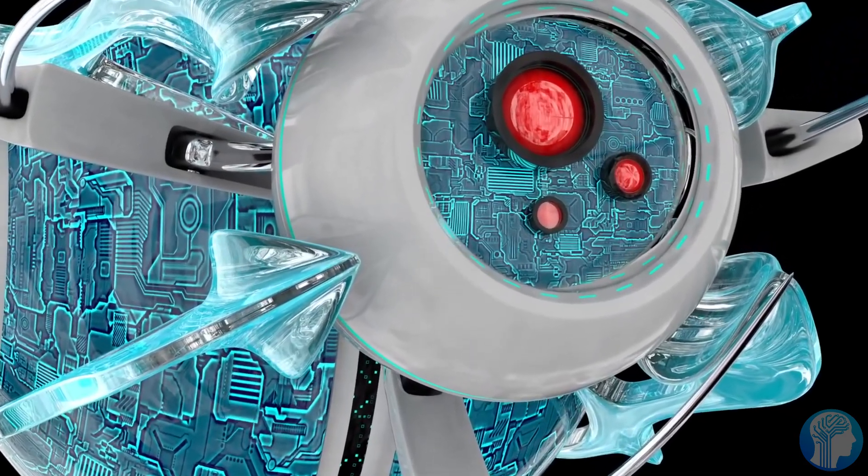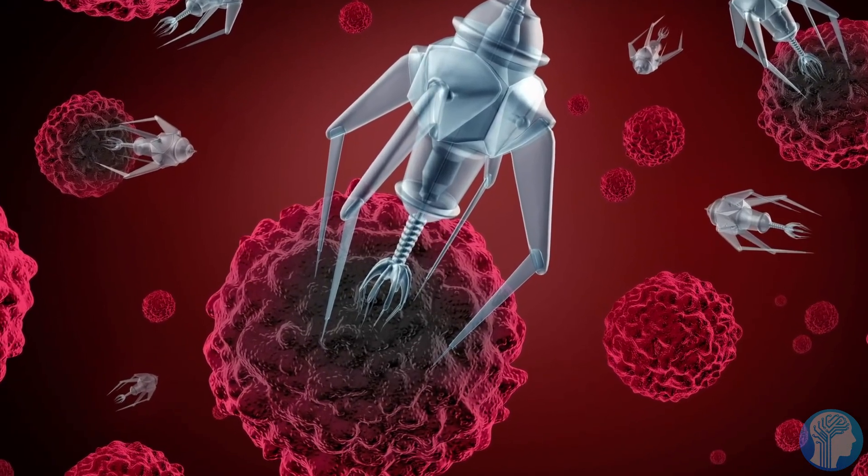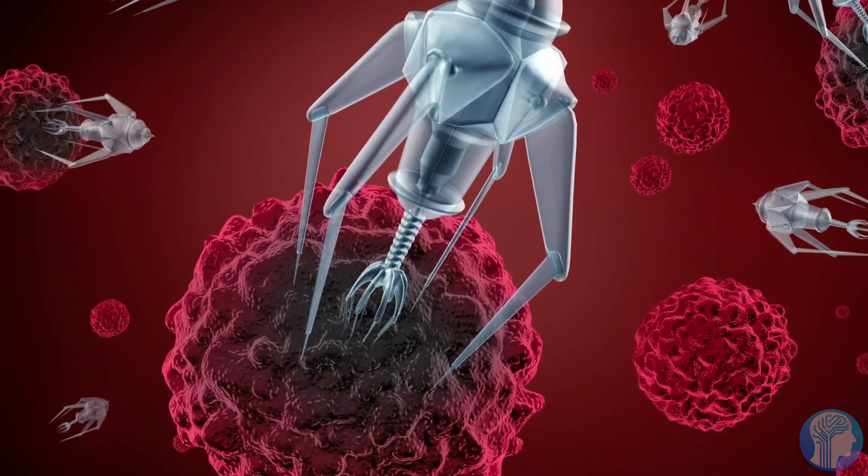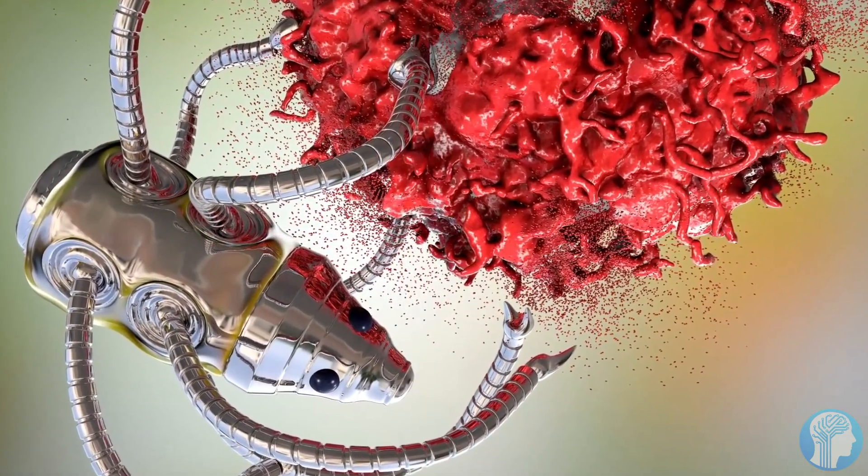Some contain embryonic brain cells from mice, while others contain stem cell-derived human brain cells. Microelectrode arrays that can both stimulate and read the activity of the cells are created on top of the cells.